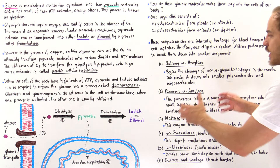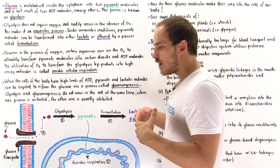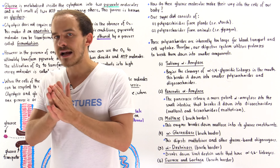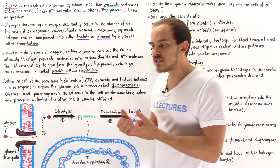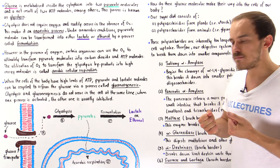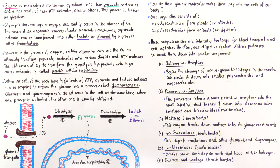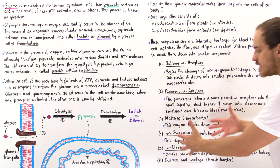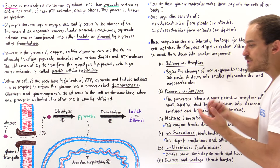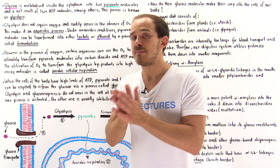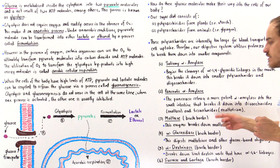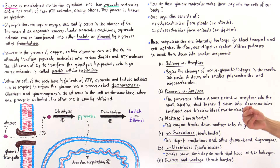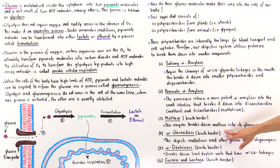The cells on the epithelium of the small intestine contain secretory vesicles — granules that contain enzymes: maltase, alpha-glucosidase, alpha-dextrinase, sucrase, and lactase. All of these enzymes are specific to the type of molecules and bonds they cleave. Maltase is released by cells on the brush border and breaks down maltose.